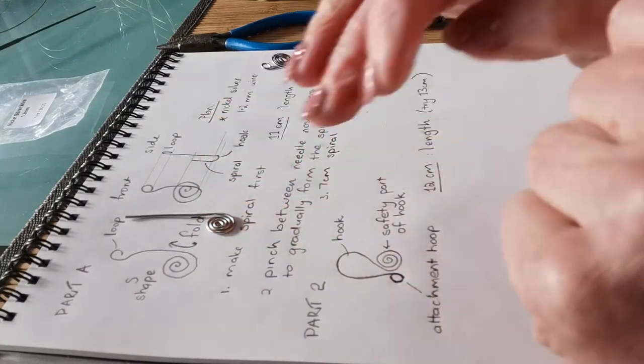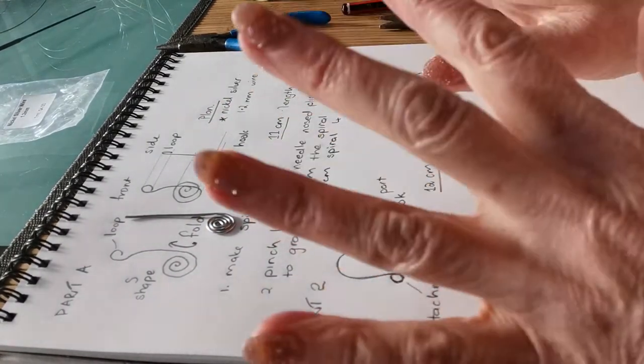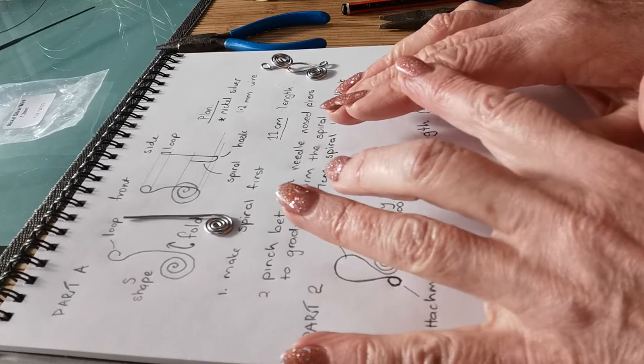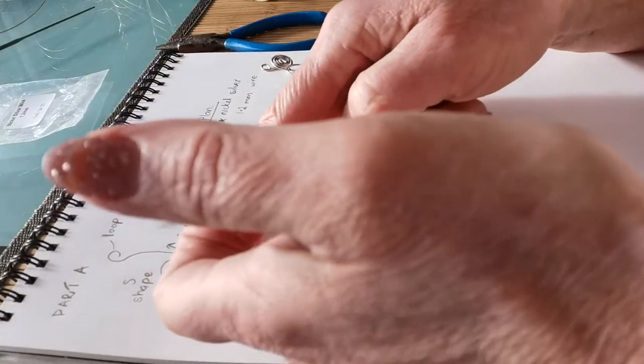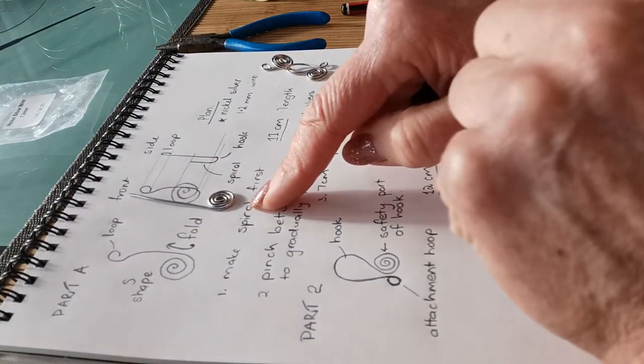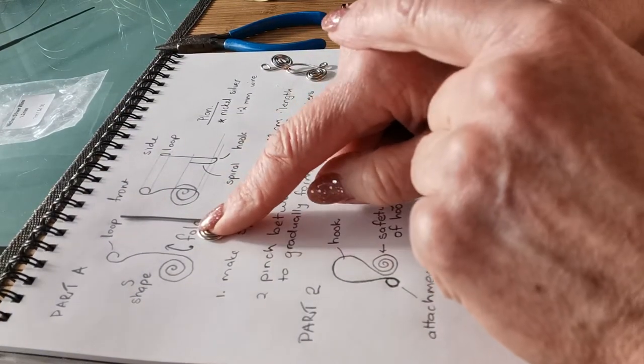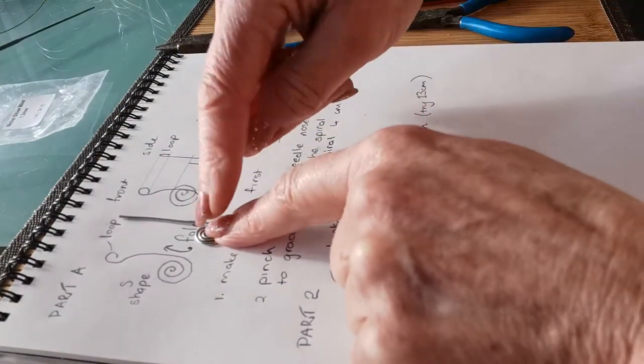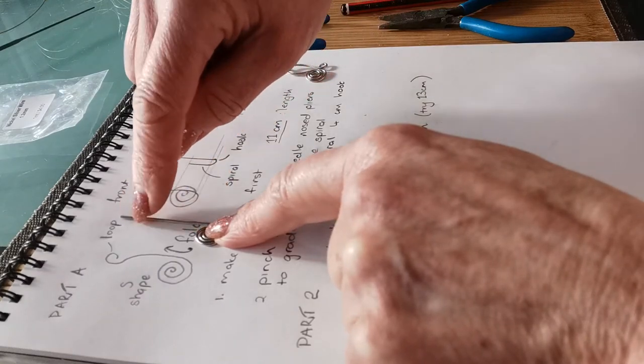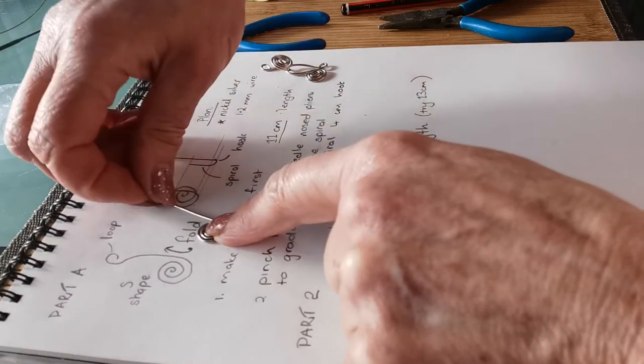Now if I look at my picture here, sticking to the same design which didn't work out too badly, I could make my hook this way or that way. Last time I did it this way, so I'll do it the same. I'm going to create an S shape.